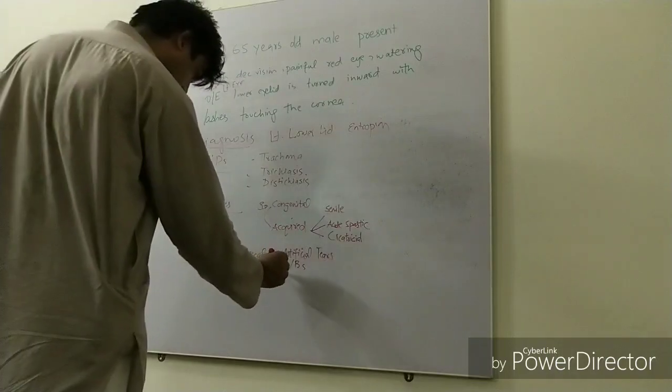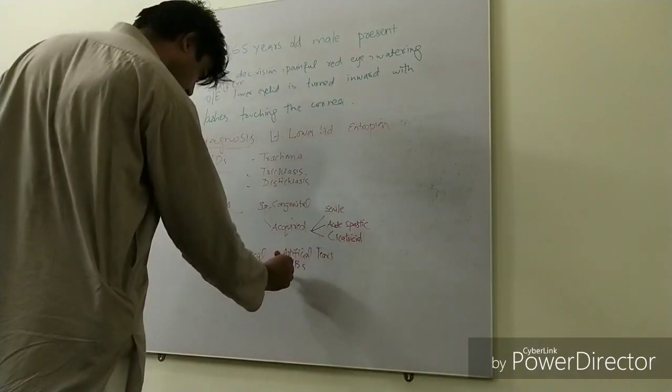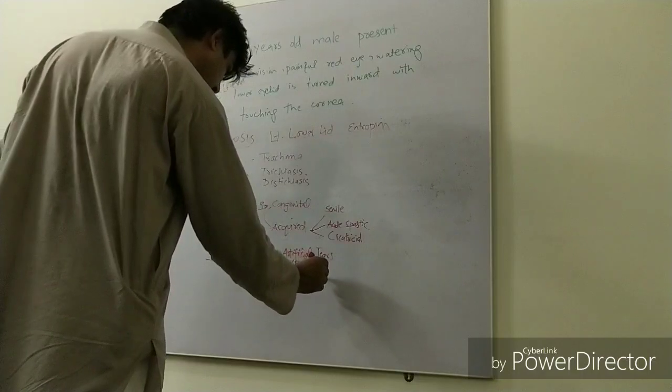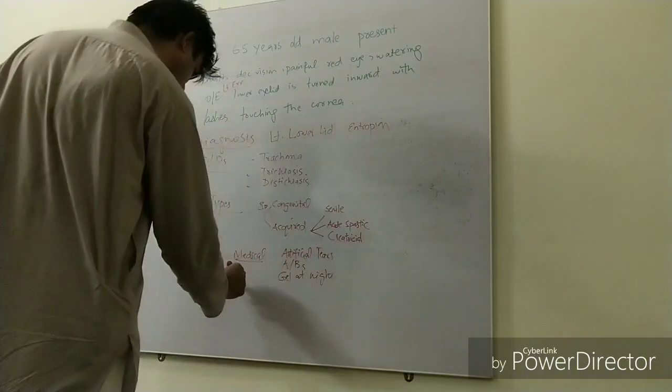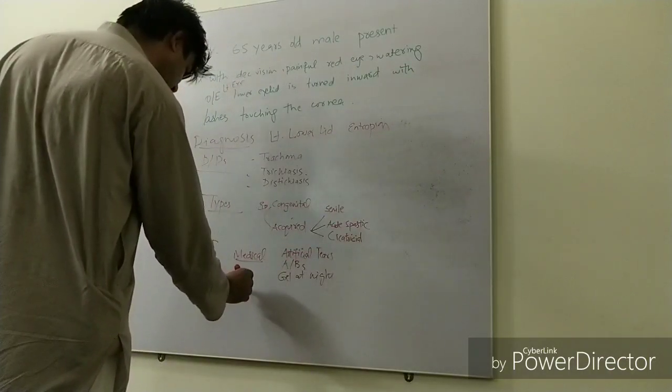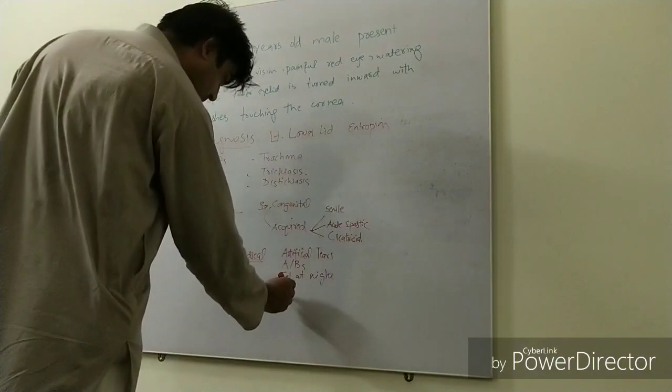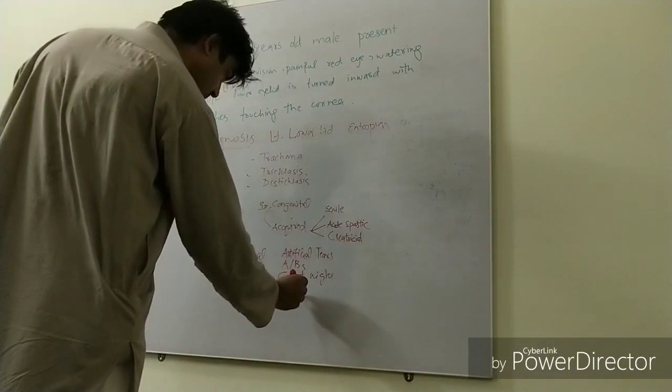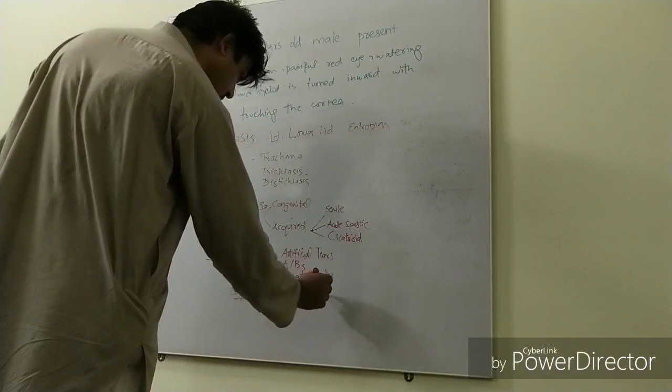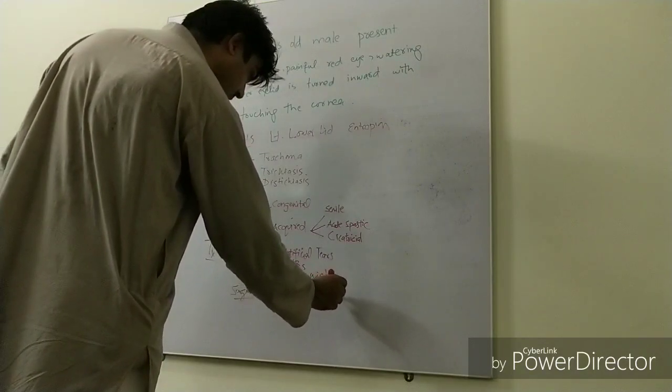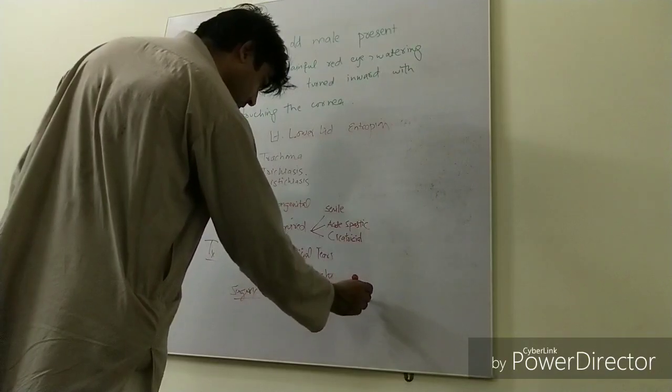Then you should try the surgical options. For minimal entropion, you should do transverse everting sutures. For moderate entropion of the lower lid, you should do Wies procedure. For severe entropion, you should do Jones procedure.